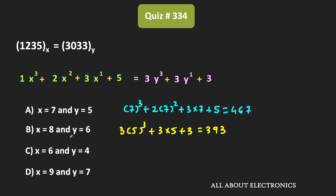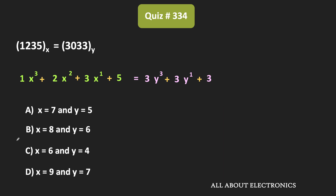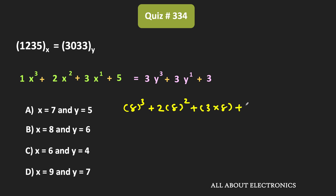Let us try option B, where x equals 8 and y equals 6. Putting x equal to 8, we get 8³ plus 2 times 8² plus 3 times 8 plus 5, which equals 669.